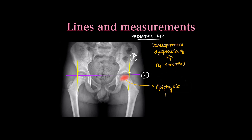To detect developmental dysplasia of the hip, we assess the position of the femoral head epiphysis relative to Hilgenreiner's and Perkin's lines. Normally, the majority of the epiphysis lies in the lower inner quadrant. If developmental dysplasia is suspected, the epiphyseal head majority lies in other quadrants — either the upper or outer quadrants.